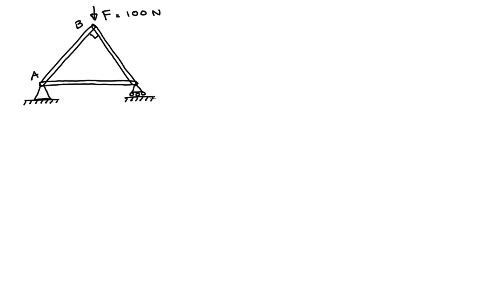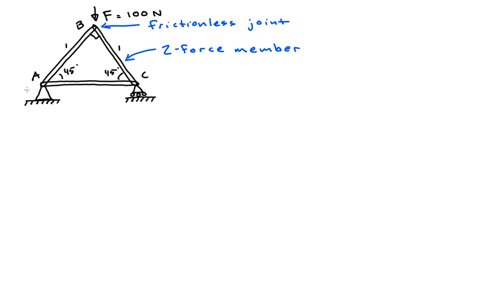A simple truss assumes that each beam is a two-force member, which means it can only be in tension or compression. It also assumes that each joint is held together by a frictionless pin. The support at point A is called a pinned support, which means it can provide reaction forces in the horizontal and vertical directions, whereas the support at C is called a roller support, meaning it can only provide reaction forces in a direction normal to its support surface.